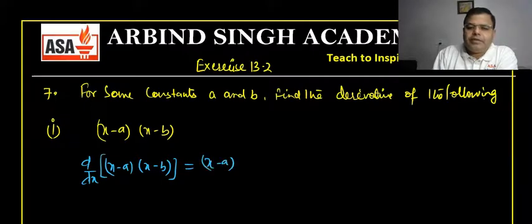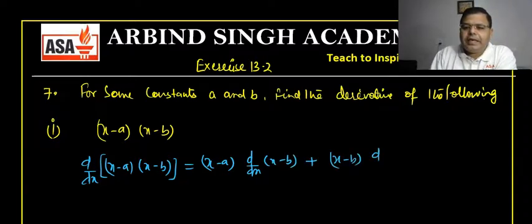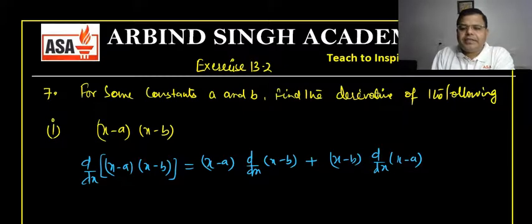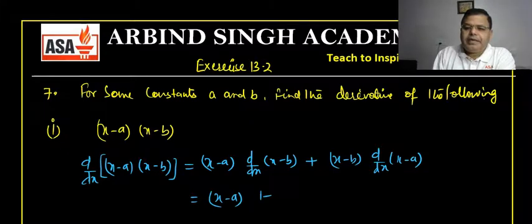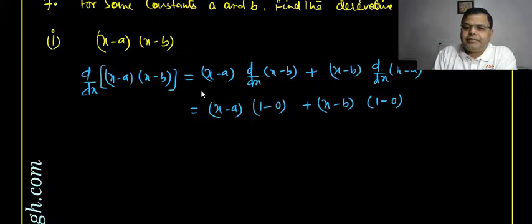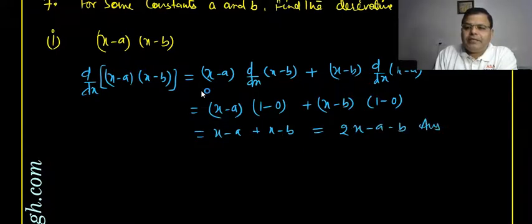Applying the product rule: dy/dx of (x − a)(x − b) = (x − a) · d/dx(x − b) + (x − b) · d/dx(x − a). Now d/dx of x is 1 and d/dx of b is 0 (constant), similarly d/dx of a is 0. So the result is (x − b) + (x − a), which equals 2x − a − b. That is the answer to the first part.